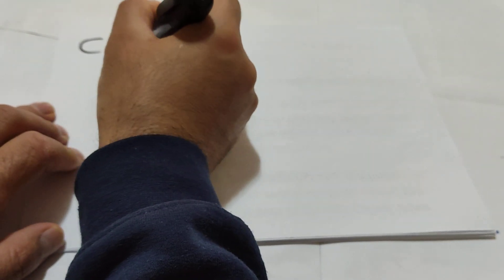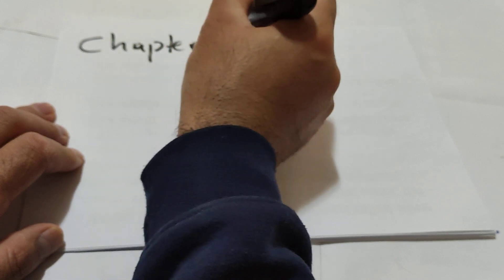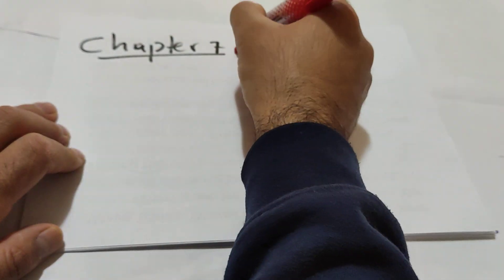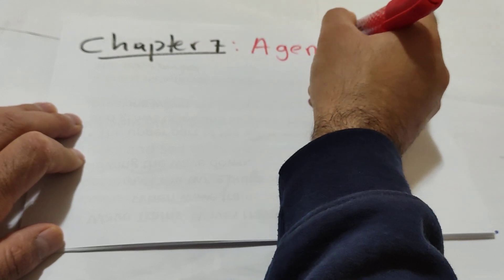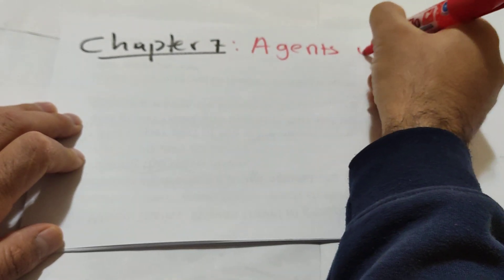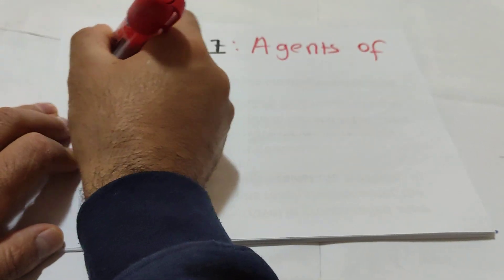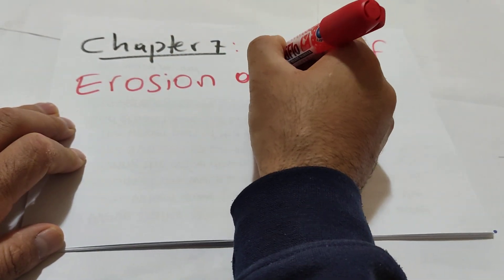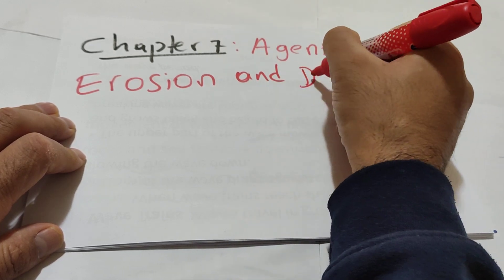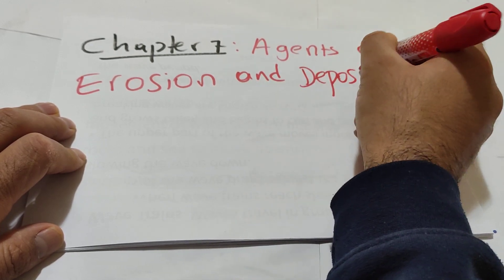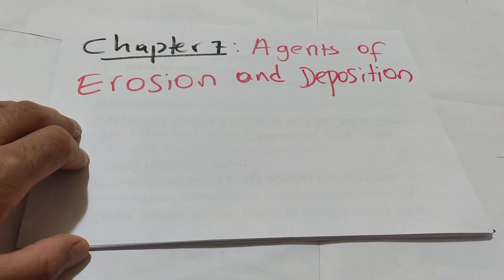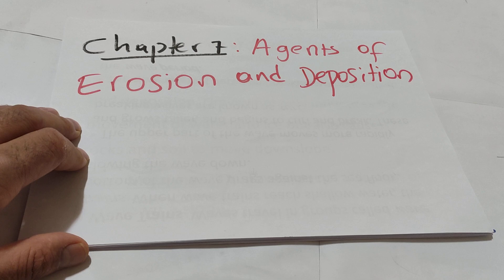Hi students. Chapter 7: Agents of erosion and deposition. There are four sections here. Section 1: active rivers.